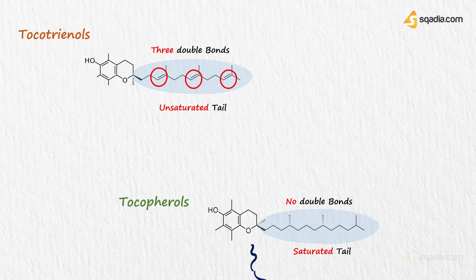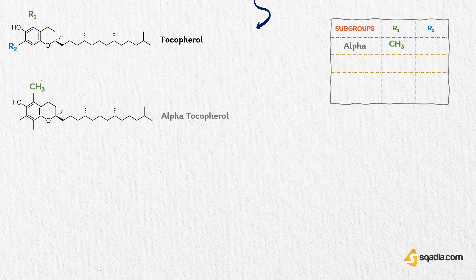Let's understand the difference in structures of different forms of tocopherols. This table helps you to differentiate them. This is the basic structure of all tocopherols. Observe the position of R1 and R2. In case of alpha-tocopherol, R1 is CH3 and R2 is also CH3.